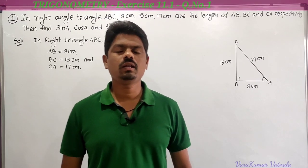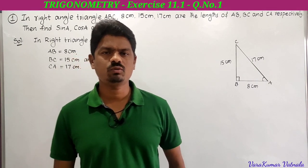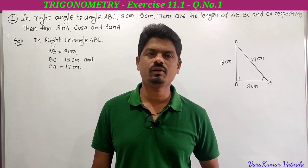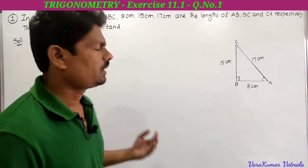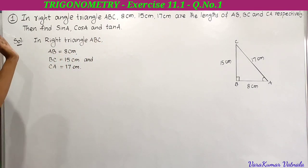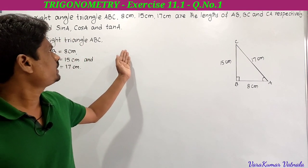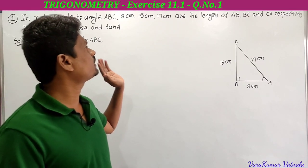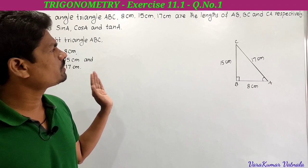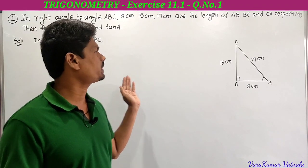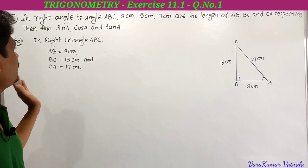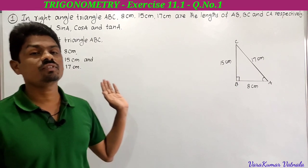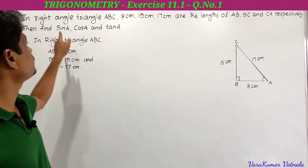Hi, hello, welcome to my channel Learn More Math. My name is Varak Kumar. Today we are going to solve a problem from trigonometry exercise 11.1, first problem. In right angle triangle ABC, 8 centimeters, 15 centimeters, and 17 centimeters are the lengths of AB, BC, and CA respectively. Then find sine A, cos A, and tan A.